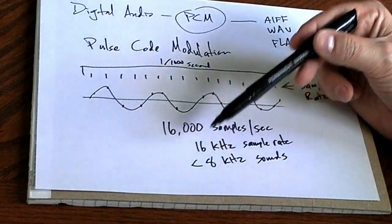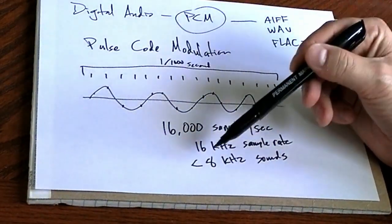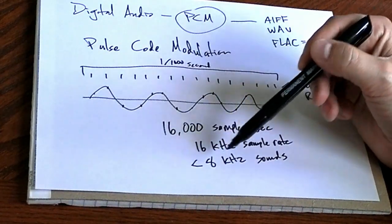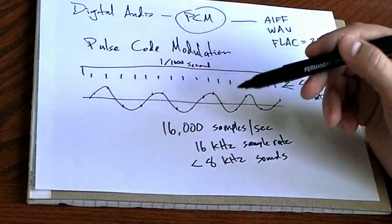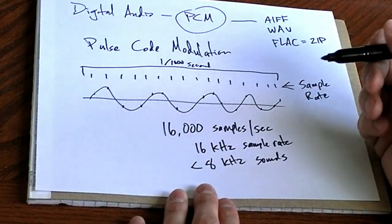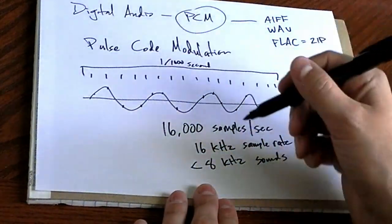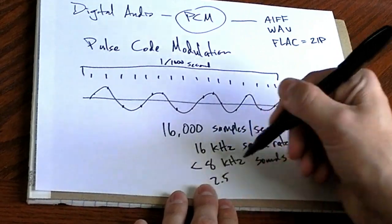In theory, this is like a mathematical asymptote, like you can approach it, but you can never quite get there. In practice, you need to leave a bit of a margin for error. So you could probably safely sample up to, let's say, 7.5 kilohertz.